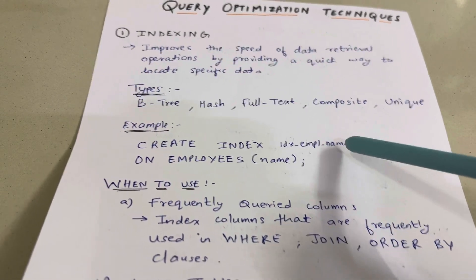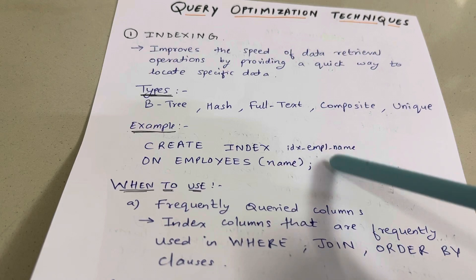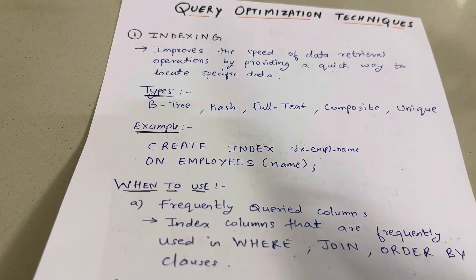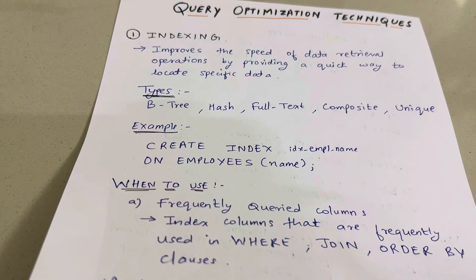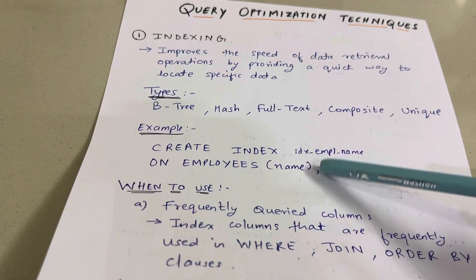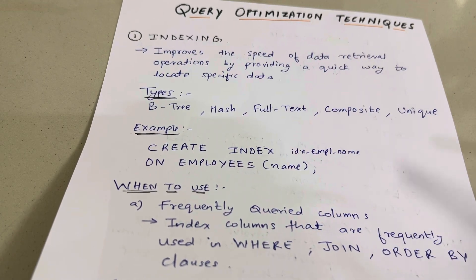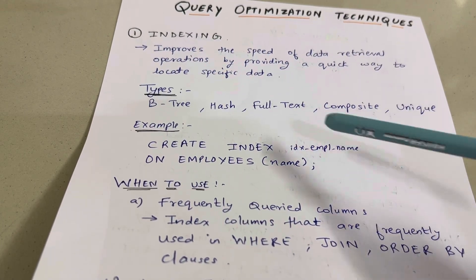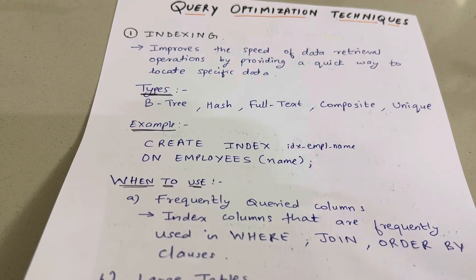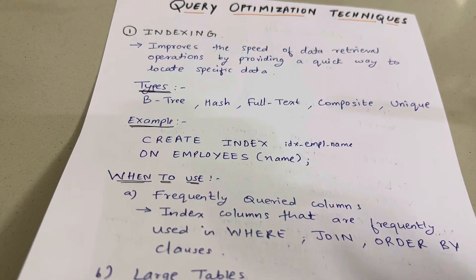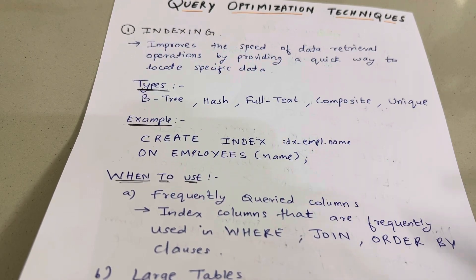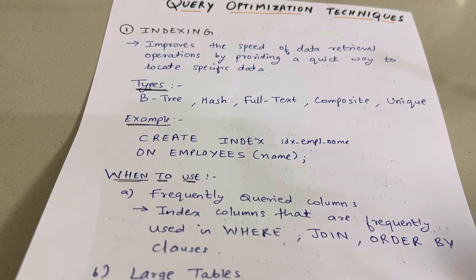In this case, the index is named idx_employee_name, created on the employees table with the column name in brackets. So we are creating an index on the column 'name'. Whenever we write a query where that column appears in a WHERE clause, JOIN, or ORDER BY, our data retrieval will be faster and the query will be optimized.